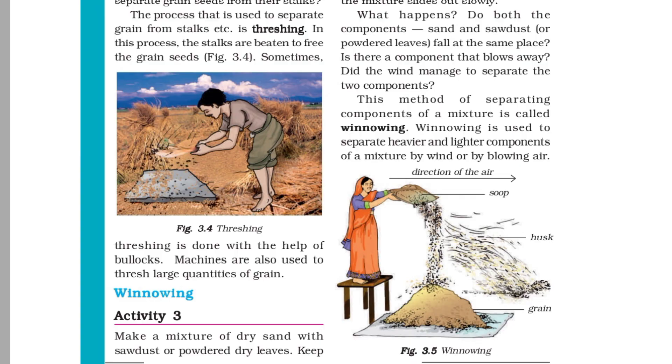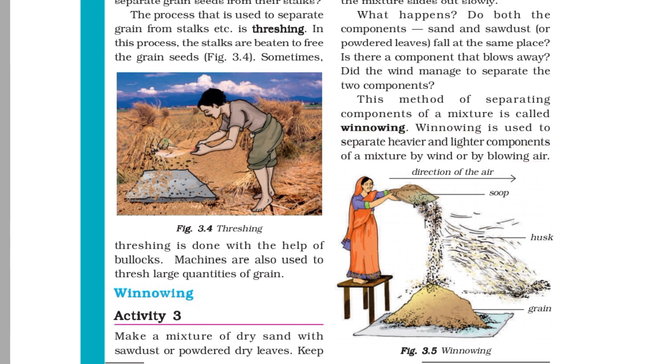The next method is winnowing — used to separate heavier and lighter components of a mixture by wind or by blowing air.